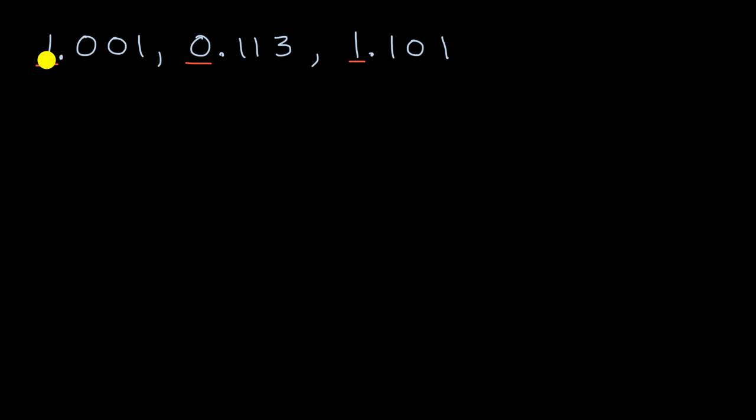And so we could see that this has one one, this has zero ones, and this one has one one. So the thing that has the least ones is going to be the smallest of the numbers. So this one over here is going to be the smallest of the numbers. Let me just write that over here. Zero point one, one, three.